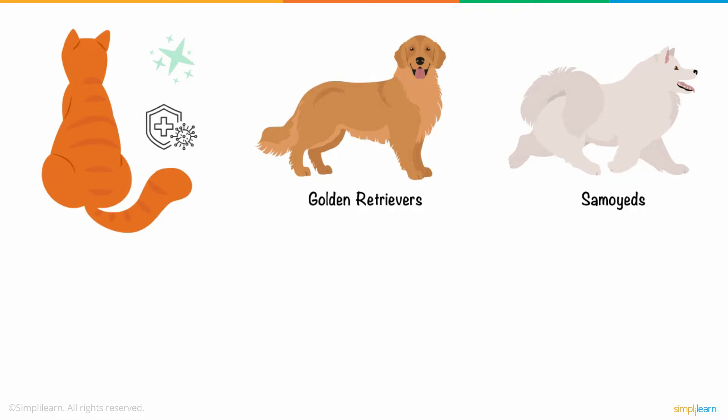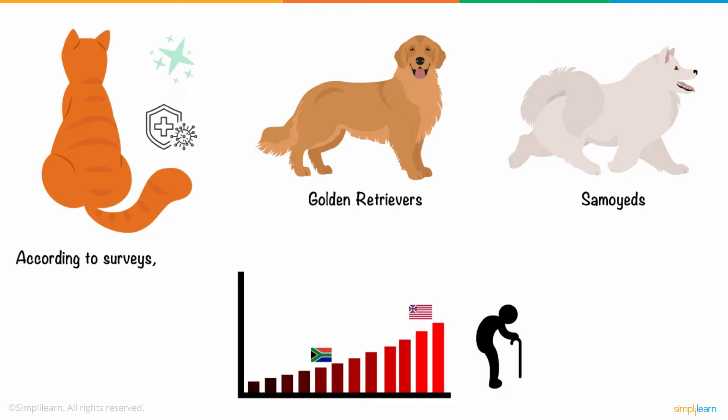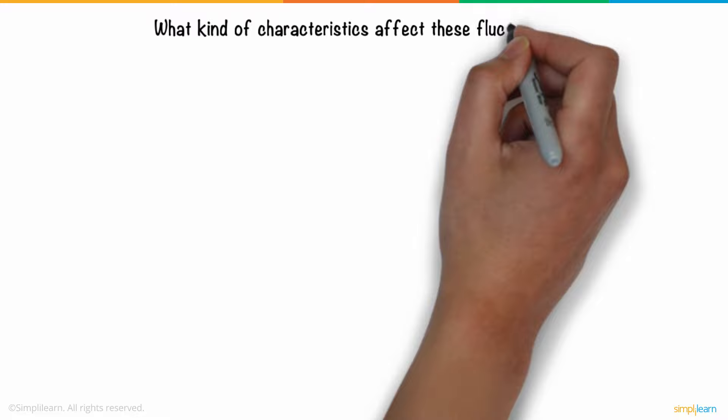According to surveys, even life expectancy in African countries is substantially lower than in North American nations. What kind of characteristics affect these fluctuations?